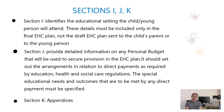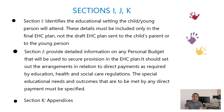Section I of the education, health and care plan identifies the educational setting the child is going to attend. When you receive your draft education, health and care plan from the local authority around week 16 of the process, you'll be invited to express a preference for an educational setting. The law allows you to make statutory preferences and also preferences under section 9 of the Education Act — this is where you can put forward your specific educational setting, and the local authority is required to consult with that setting and decide whether to name it in the EHC plan. In unusual circumstances, the local authority has a power to name a type of setting if it has not been able to identify a particular named school.